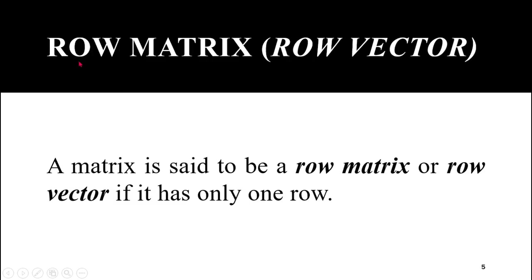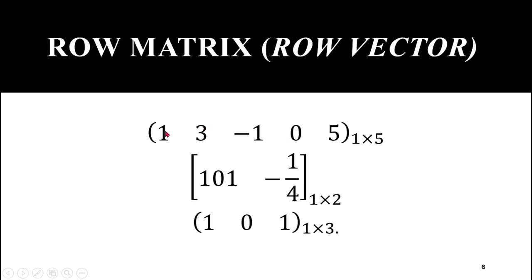Next type: row matrix or row vector. A matrix is said to be a row matrix or row vector if it has only one row. This is a matrix containing five columns but only one row, so its order is 1×5, and as it contains only one row, it is a row matrix.